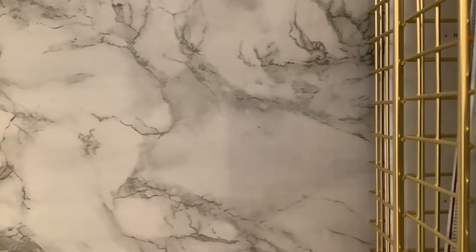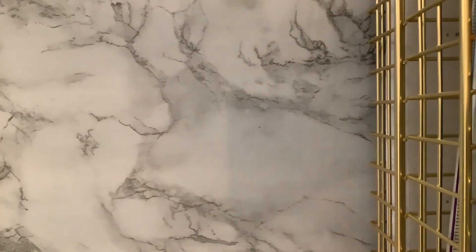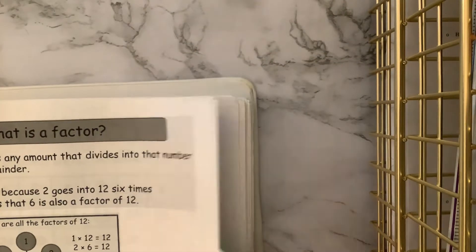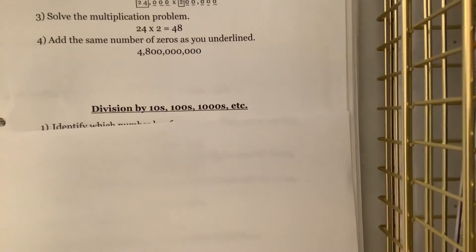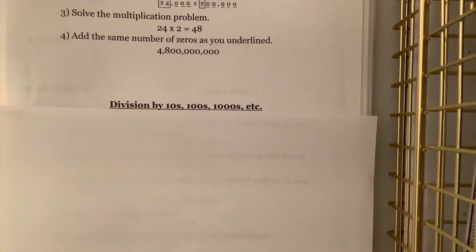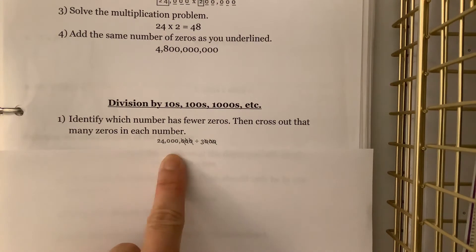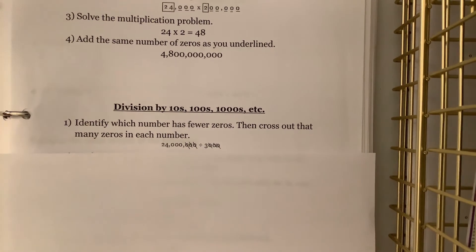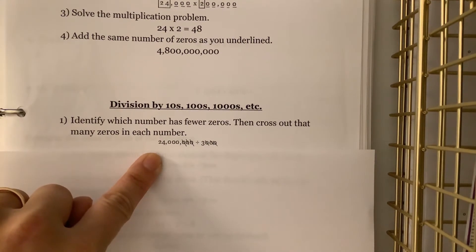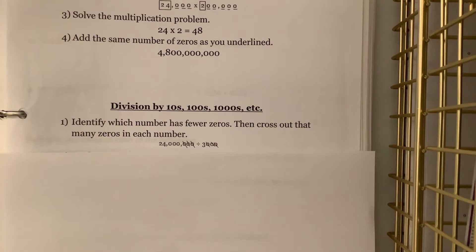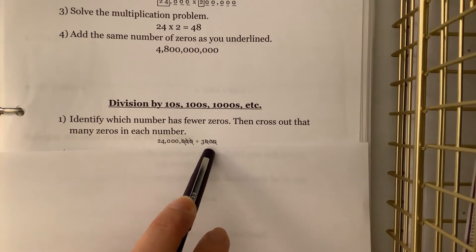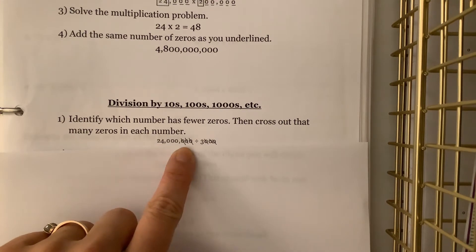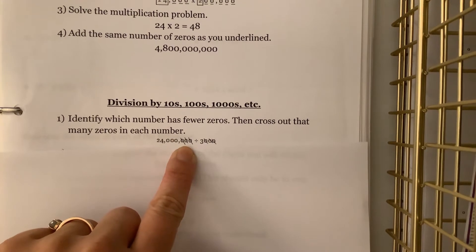So fifth graders, we're going to look now in our math resource binder — this is going to be the bottom half of the notes from our last lesson. We're looking at what happens if we're dividing by something that is a multiple — not a one, but maybe two, three, or four. Here are our notes: if we're dividing by tens, hundreds, thousands, etc., and that number is not a one — for instance 24,000,000 divided by 3,000 — step one is to identify which of the two numbers has fewer zeros. Then cross out that many zeros in each number. These zeros really need to be at the end of the number. In this case, this number has six zeros and this has three zeros, so we cross out one, two, three here and one, two, three here.